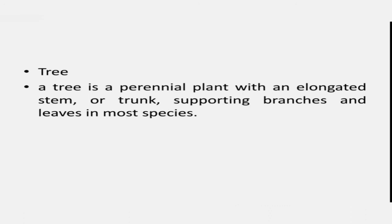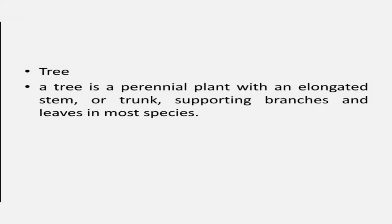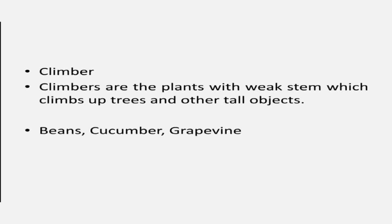Shrubs are distinguished from trees by their multiple stems, shorter height, and being less than 6 to 10 meters tall. A tree is a perennial plant with an elongated stem or trunk, supporting branches and leaves in most species. Climbers are plants with a weak stem which climb up other trees and tall objects. For example, beans, cucumber and grapevine.